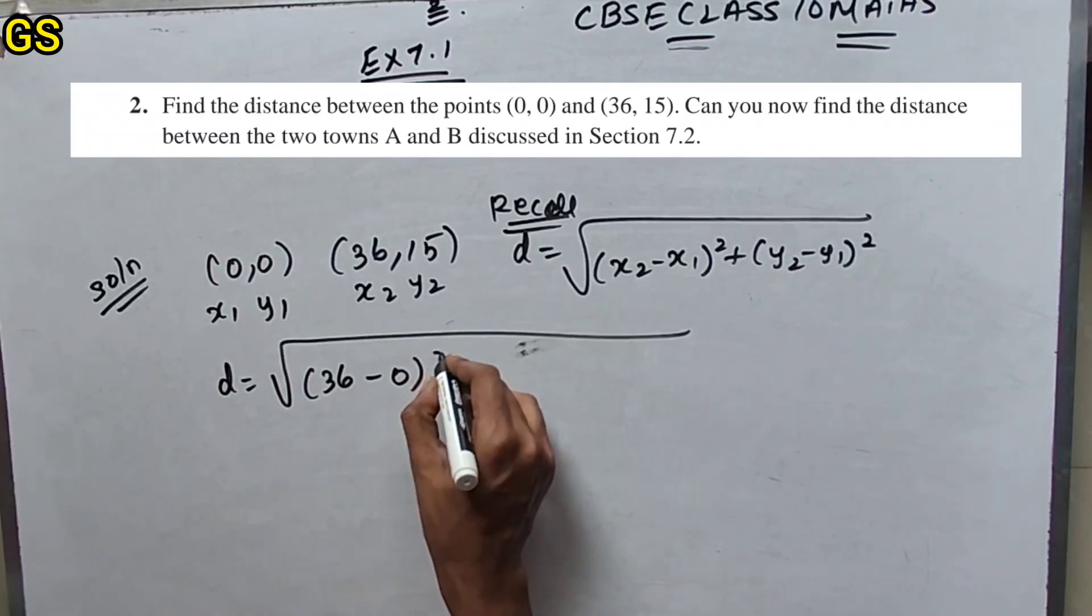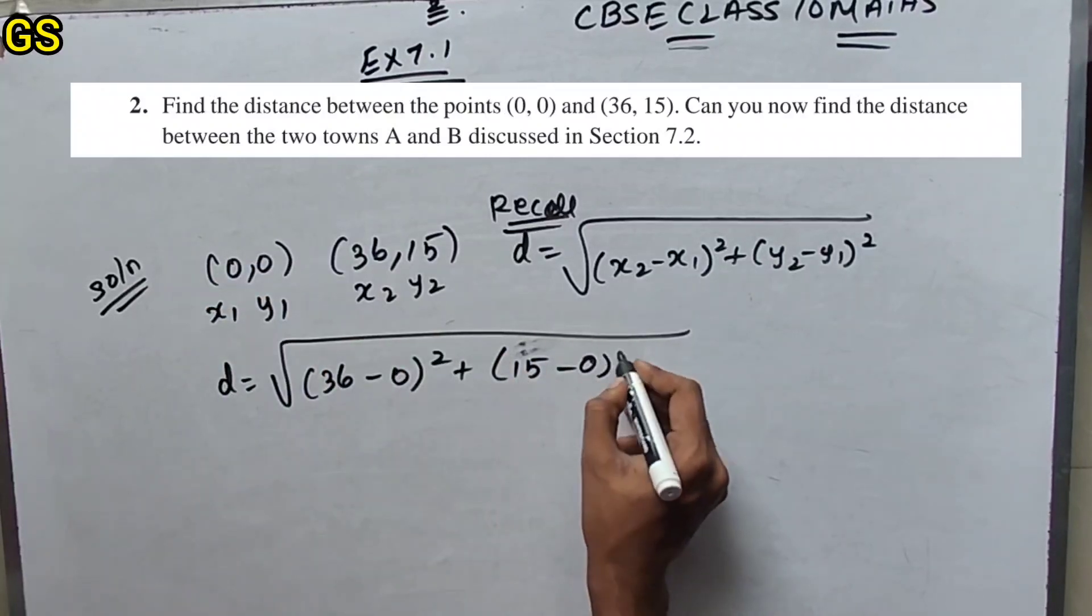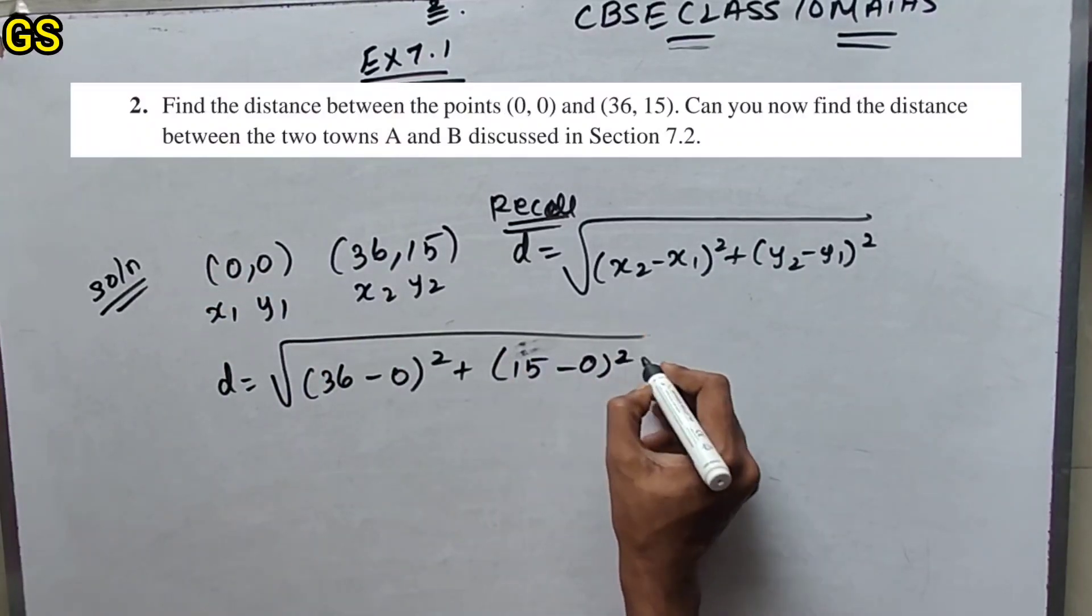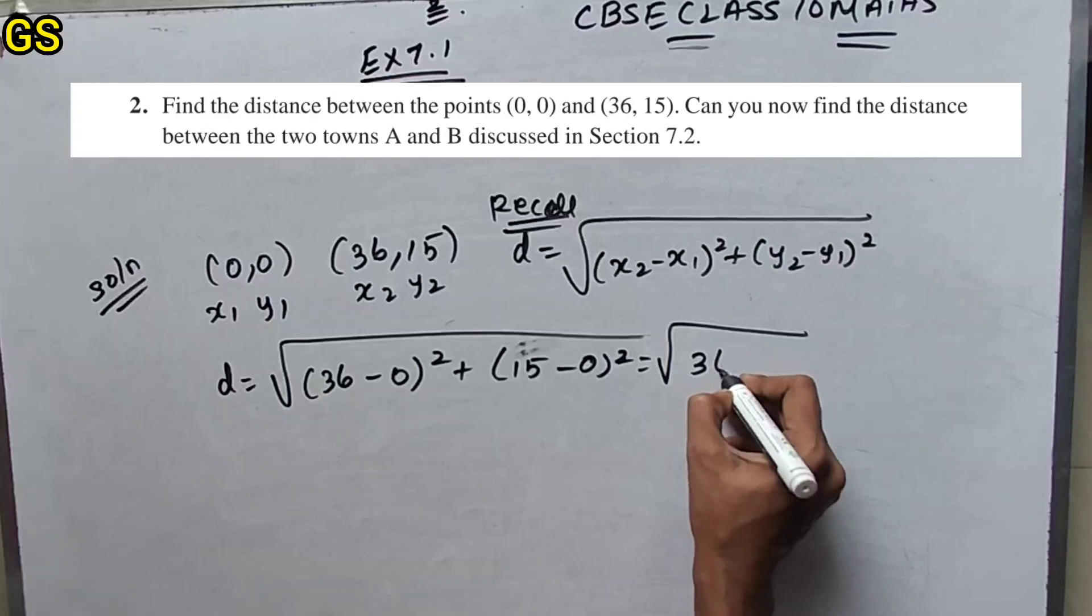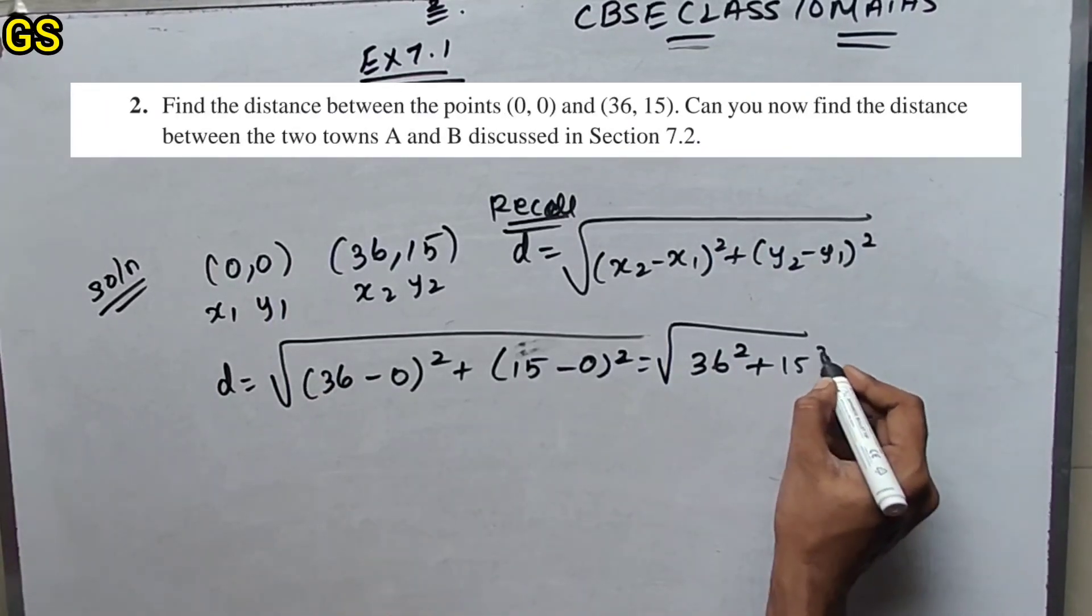x₂ is 36 minus x₁ is 0, the whole square, plus y₂ minus y₁, 15 minus y₁ is 0, the whole square, which is root of 36 square plus 15 square.